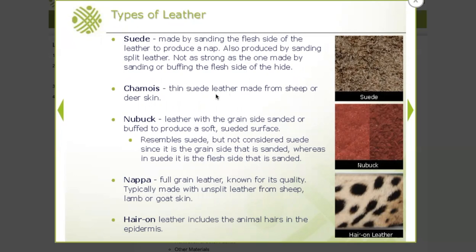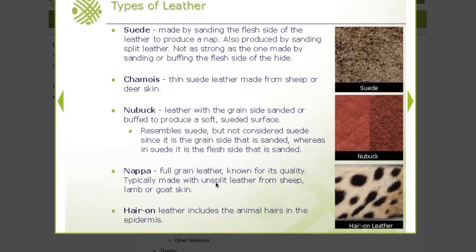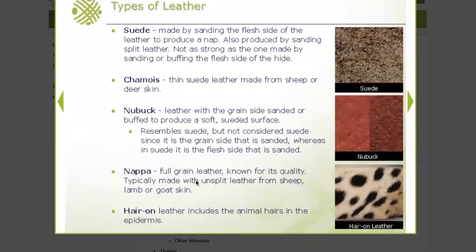You can also make thin suede leather from sheep or deer skin, called chamois. Nubuck is similar to suede but uses the grain side of the leather sanded or buffed to create a suede-like surface — it's not considered suede because it's the grain side that's sanded; suede uses the flesh side. Napa is full grain leather, generally from sheep, lamb, or goat skin, and seeing the word napa means it's pretty good quality.